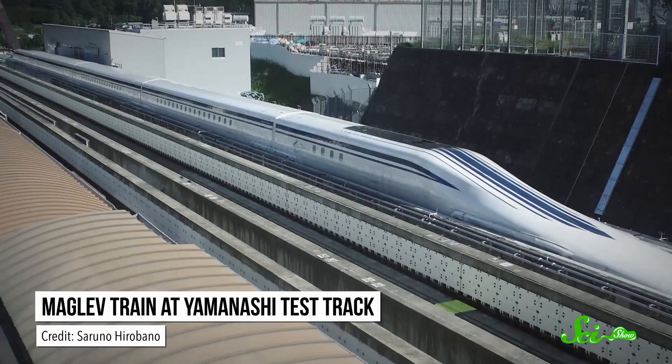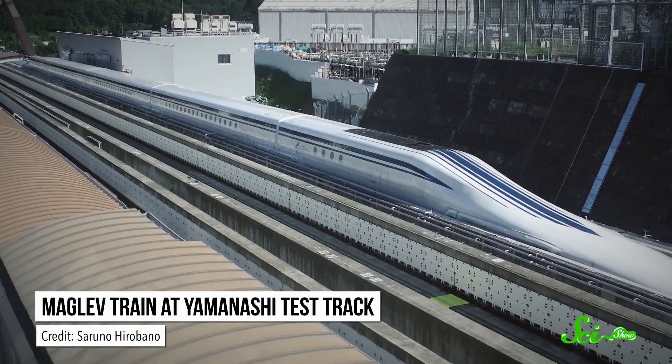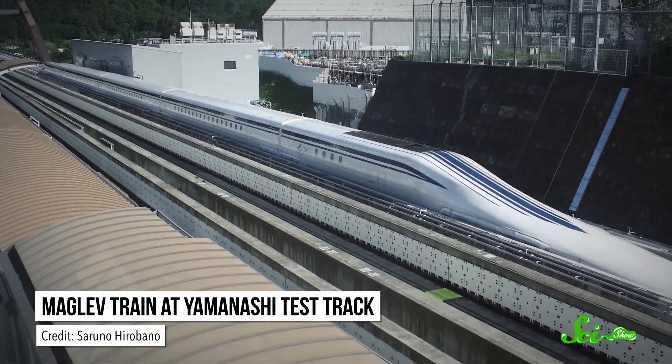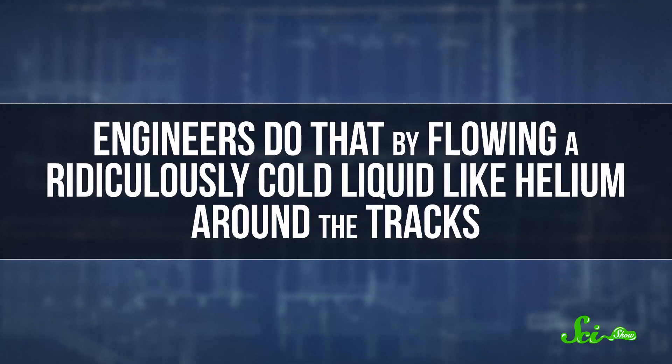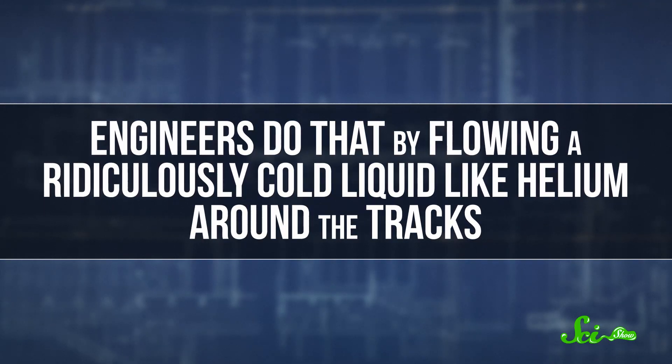See, things that stay very cold liquids are really good at keeping things cold. Some of the world's fastest trains, for example, float over the tracks, but they need to be really cold. Super-cooled, in fact, for that to work. Engineers do that by flowing a ridiculously cold liquid, like helium, around the tracks. And lots of complicated equipment, like particle accelerators, need to be kept very cold to work, too.